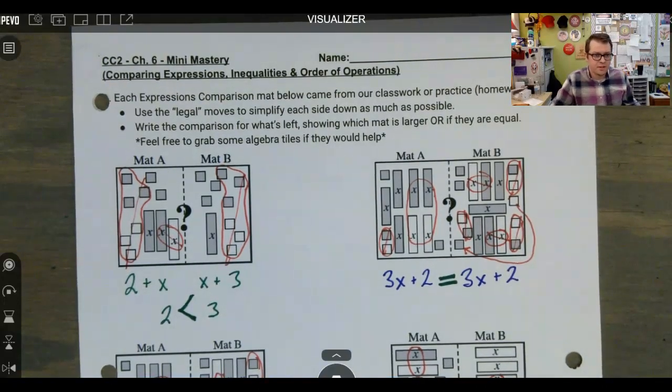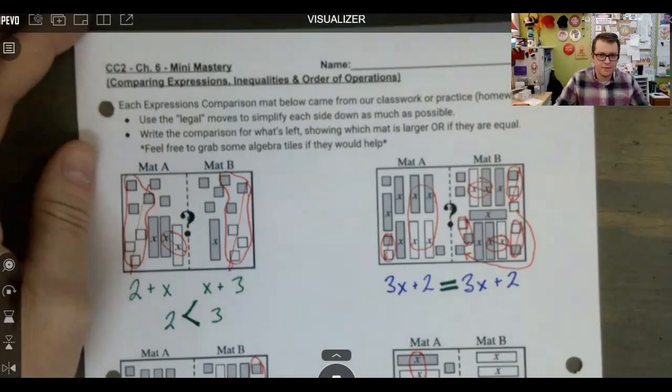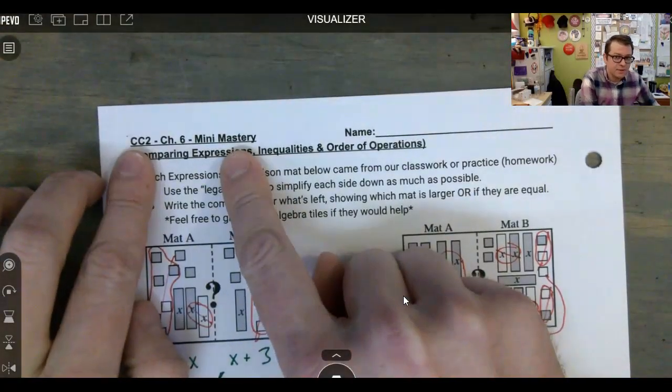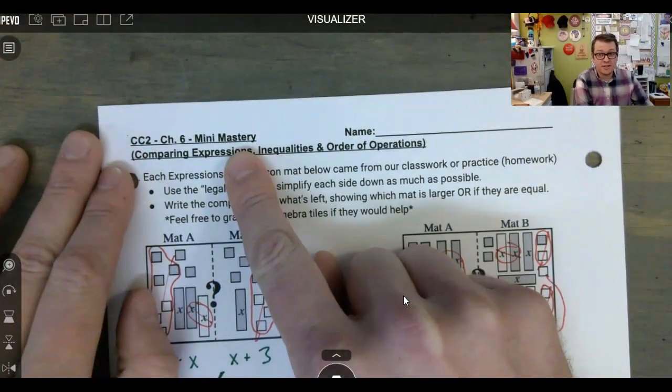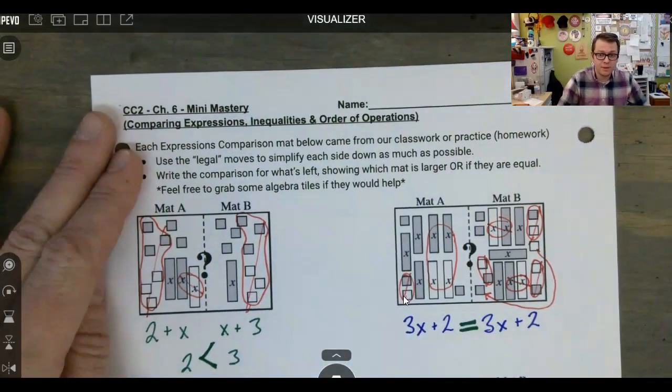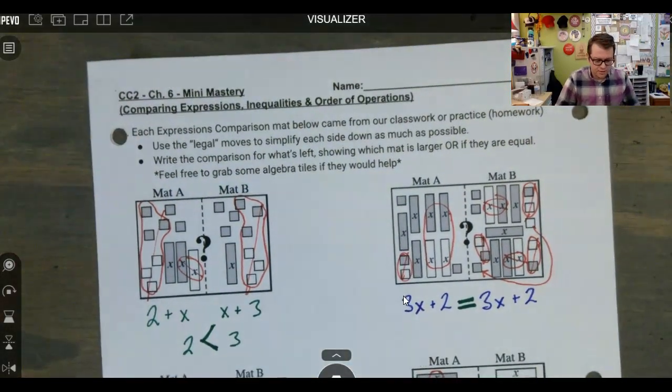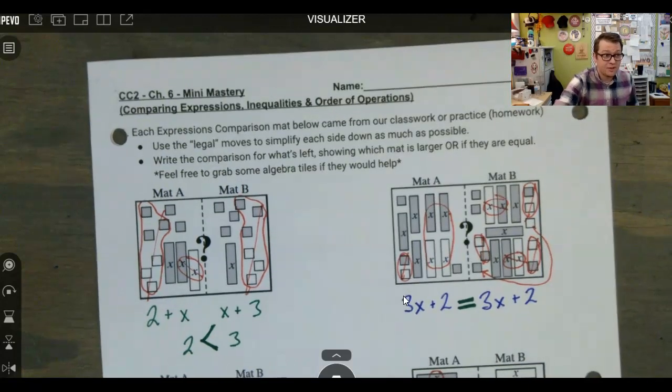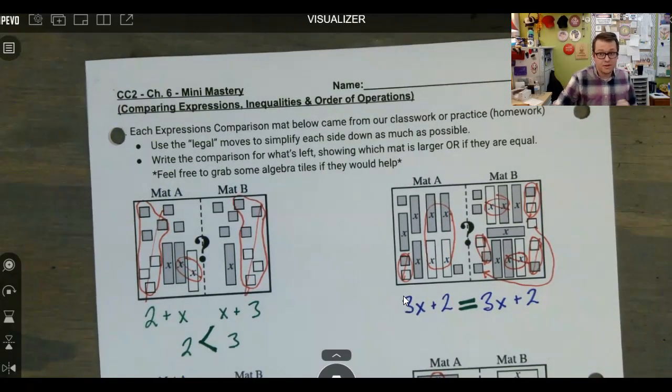Alright, here we go guys with another one of these flipped review things, trying to be efficient with our time so I can individually meet with people. This is our chapter six mini mastery. Some of you did not turn this in, so I'm actually probably going to be using this time to call people up and ask you where these mini masteries went to. But assuming that you have yours, even if you haven't turned it in, you could check it on your own.